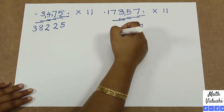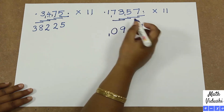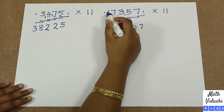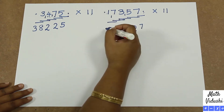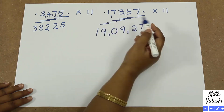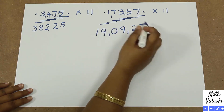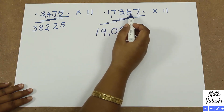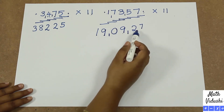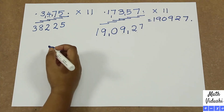Then 5 plus 7 plus the carryover 1 is 13 — wait, 3 plus 5 is 8, plus the carryover 1 is 9. Write the units place of 10 as 0 and put a 1 here. Then you add and get 9. And then 1 plus 0 which is 1. So the answer for 17357 multiplied by 11 is 190,927.